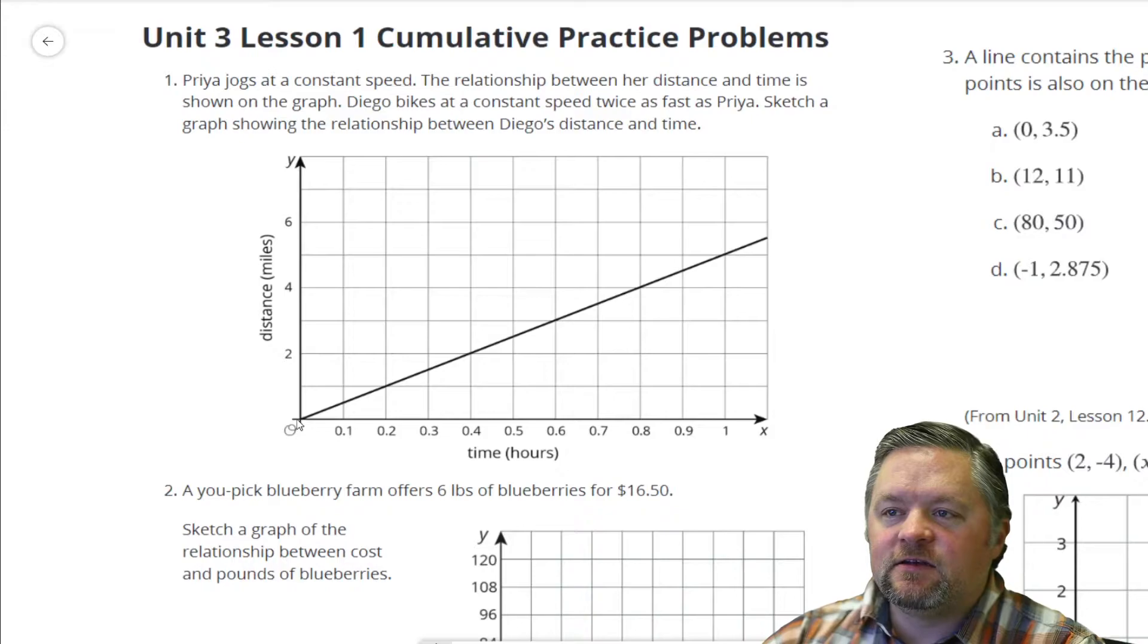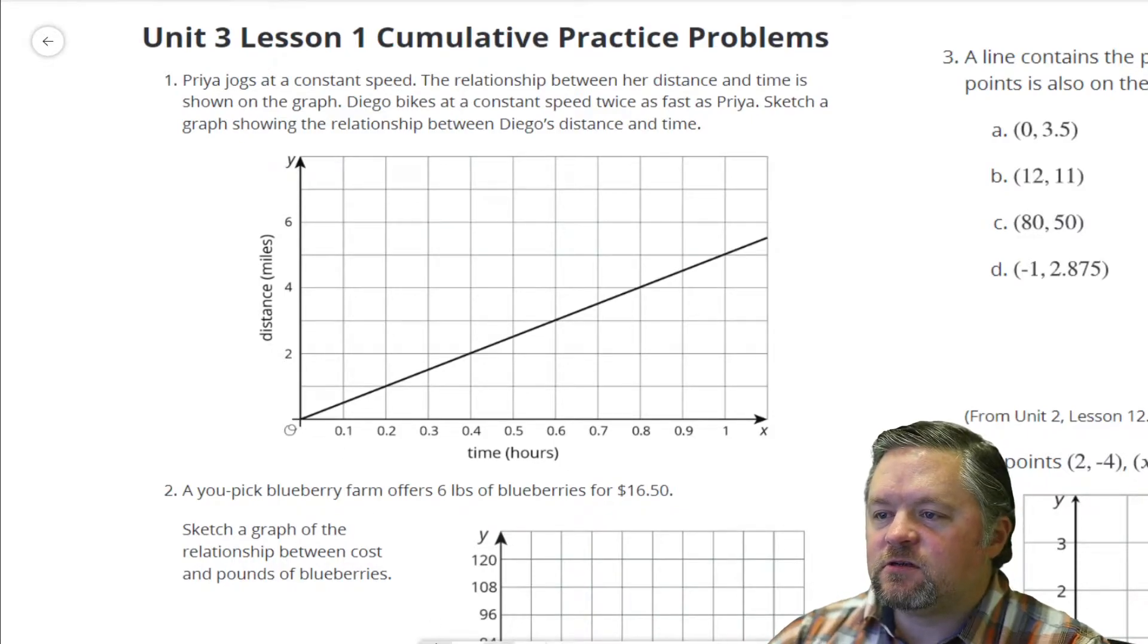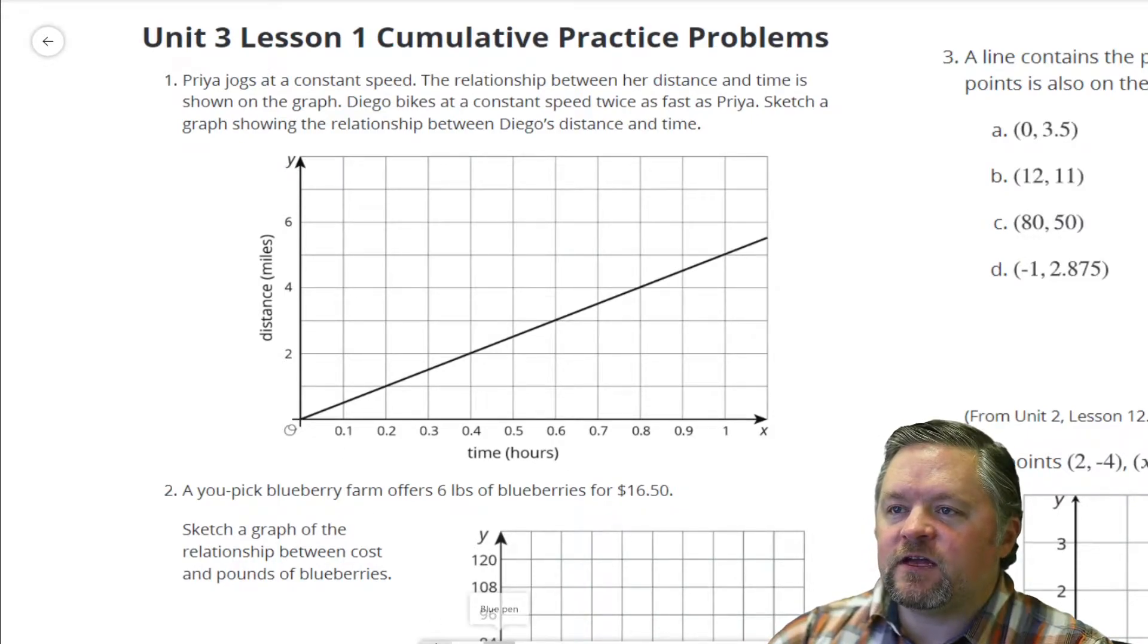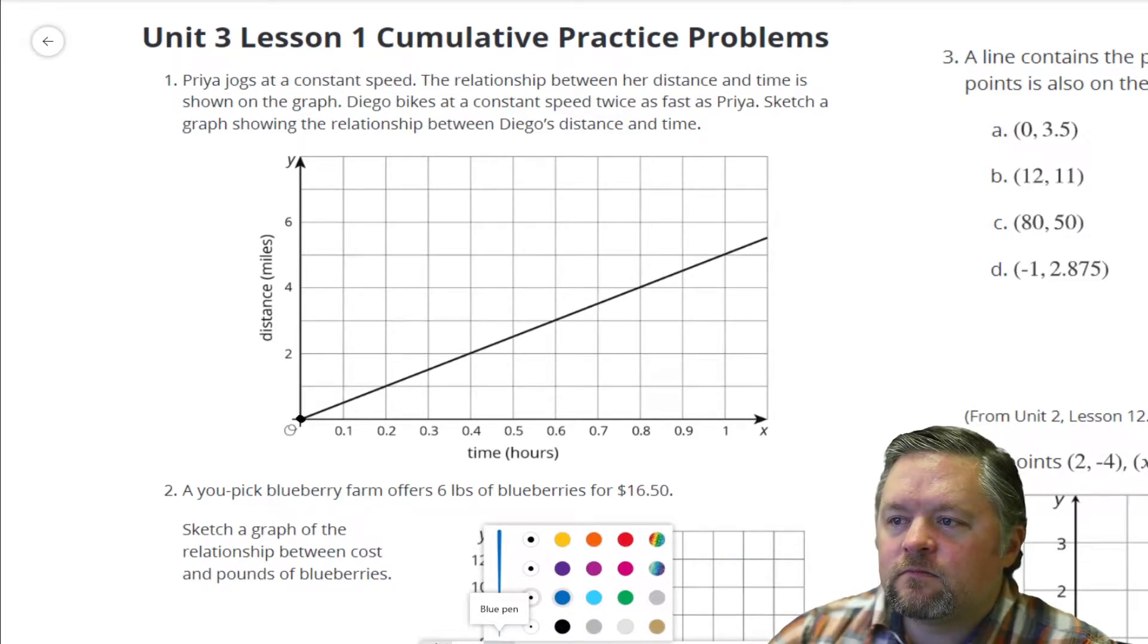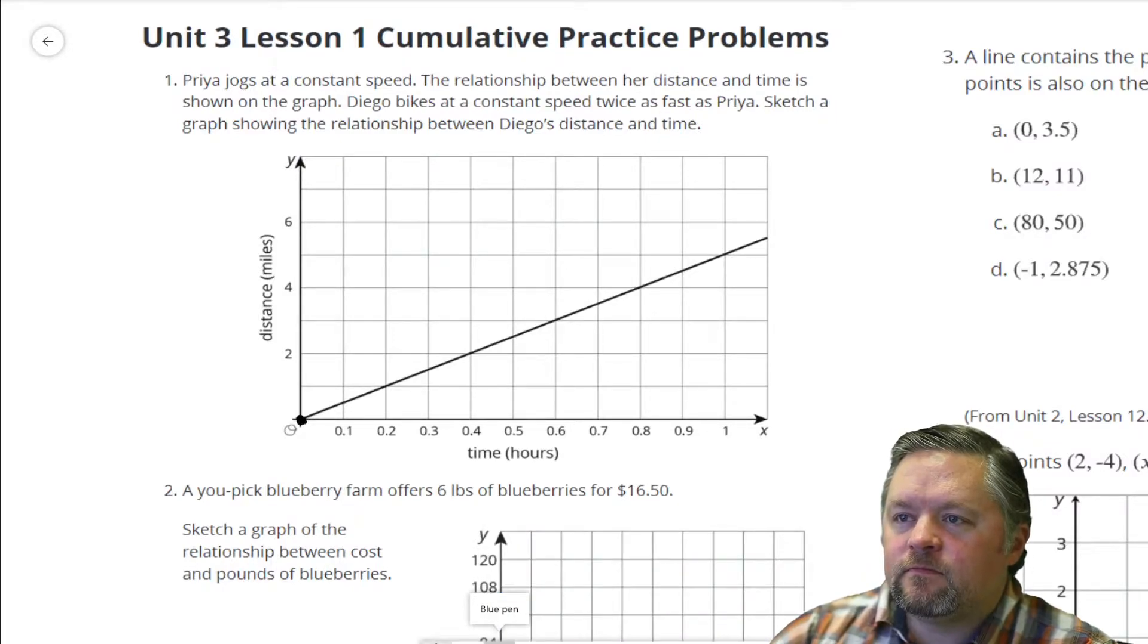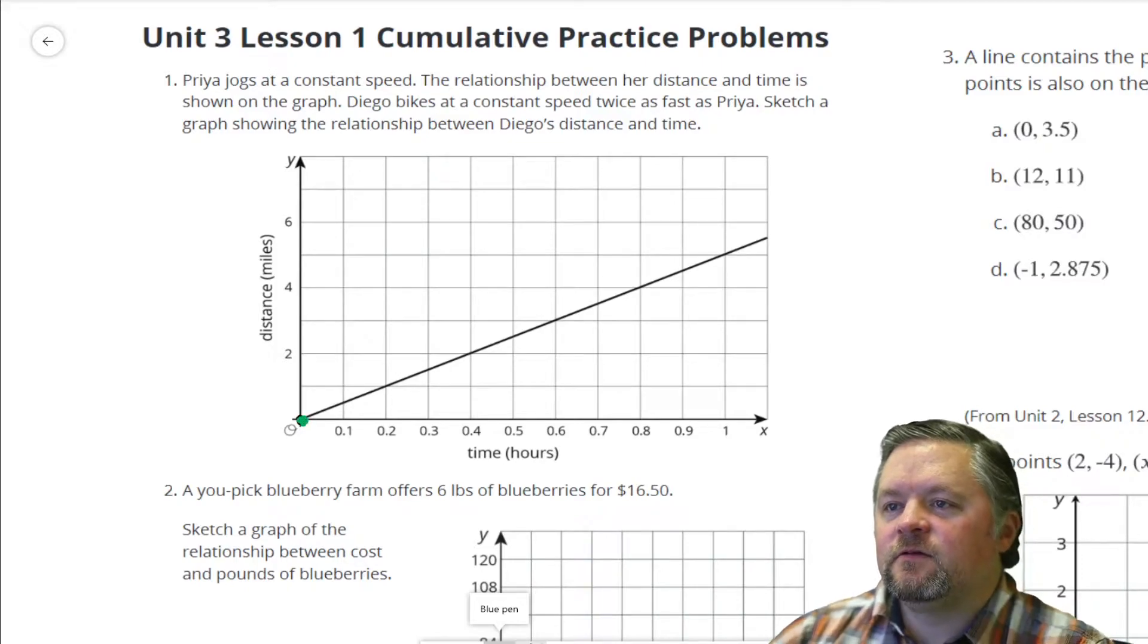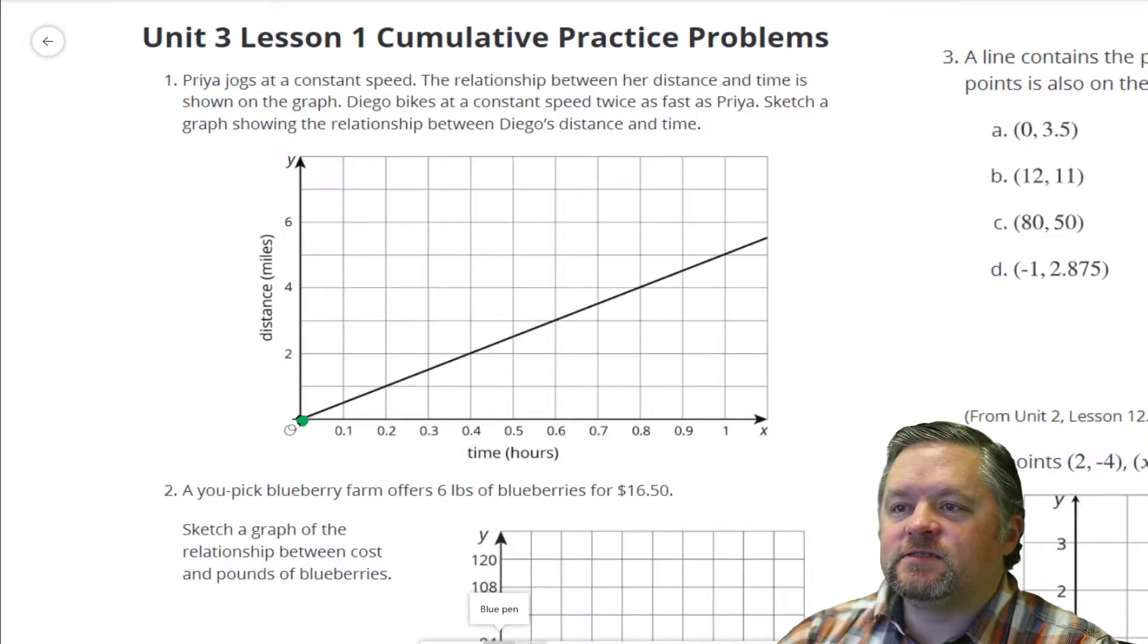So there are a few points on here that are pretty easy to figure out. Even if he's going twice as fast, after zero hours, let me use a different color for Diego. After zero minutes, he's still gone zero miles.